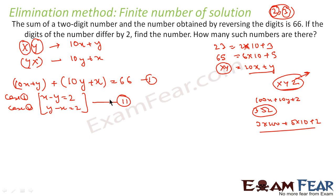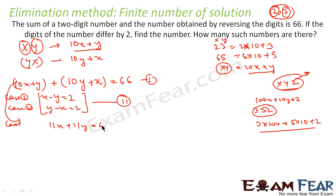We have two equations. The sum equation 10x plus y plus 10y plus x equals 66 simplifies to 11x plus 11y equals 66, which gives 11(x plus y) equals 66, so x plus y equals 6. This is the first equation.